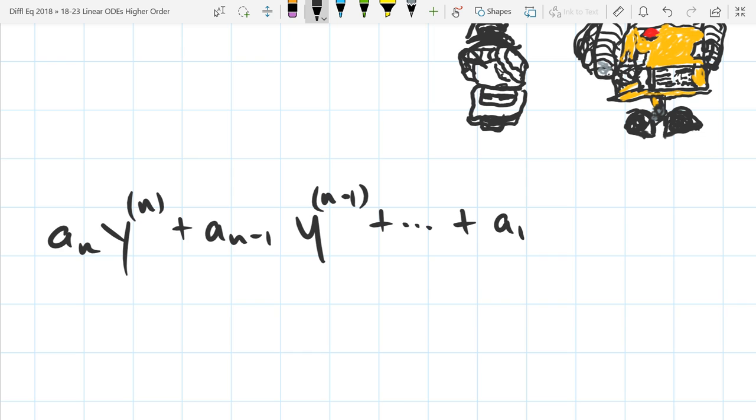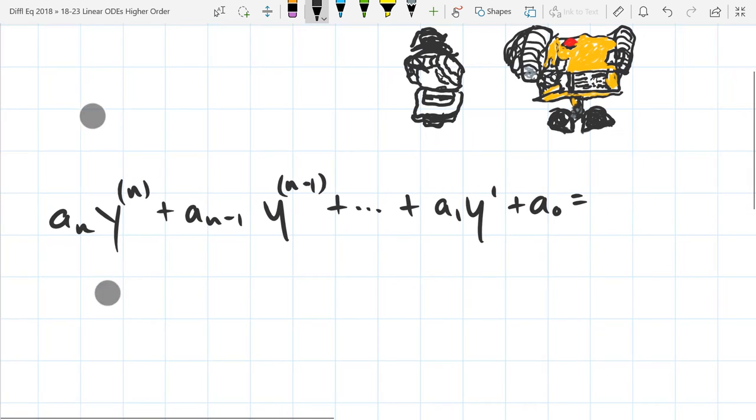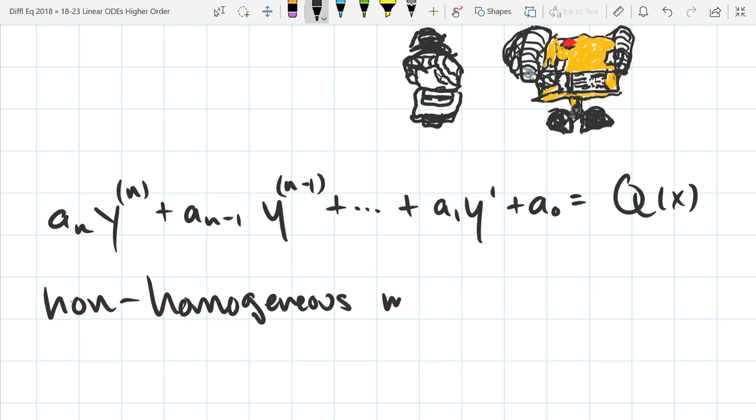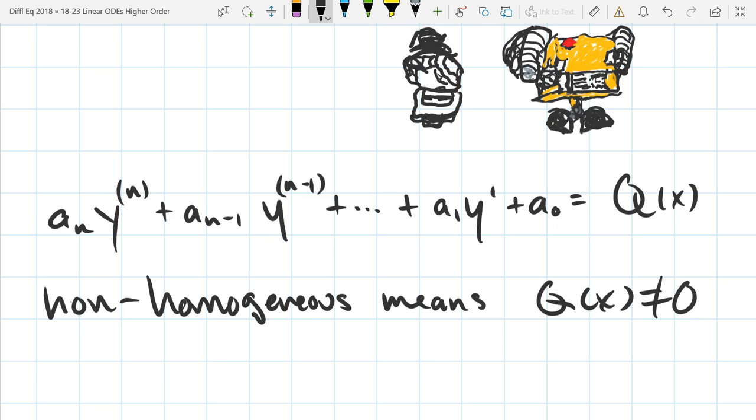So we're going down to A1Y prime plus A0. If this was homogeneous, this would equal zero. It's not homogeneous, so we're going to get a function over here. I'm going to use Q of X, not zero.